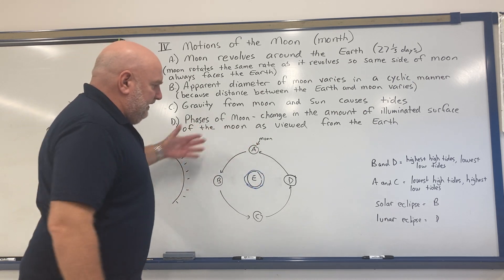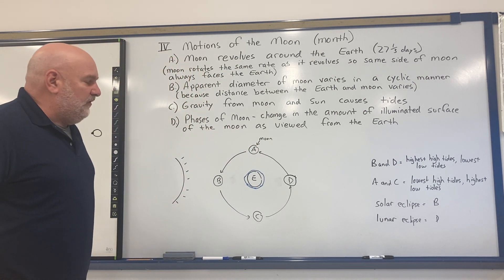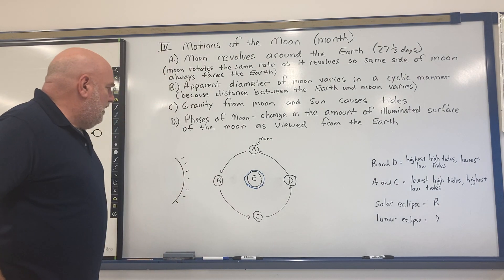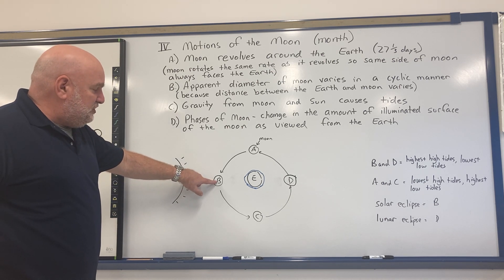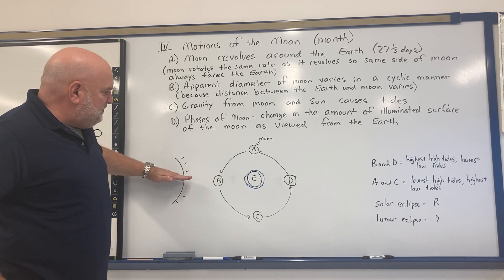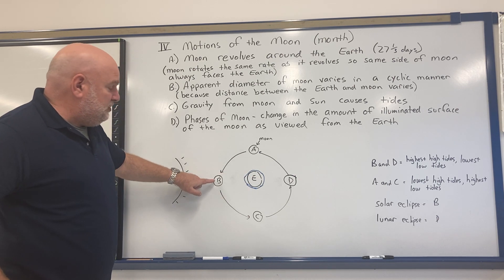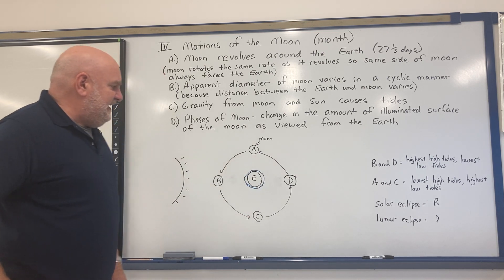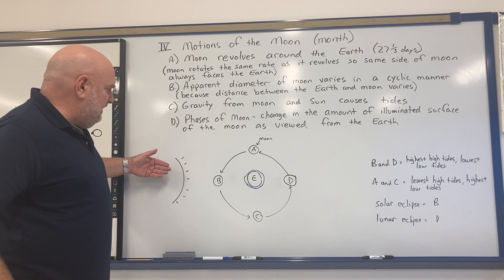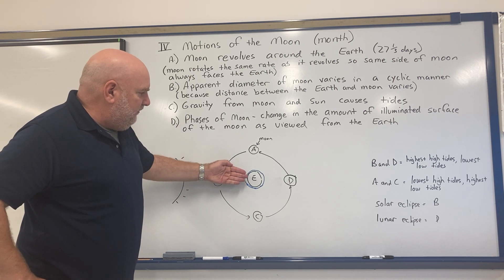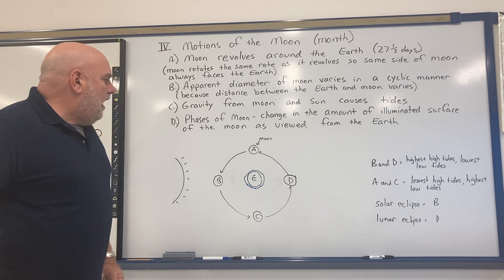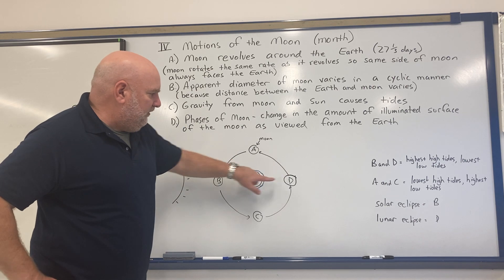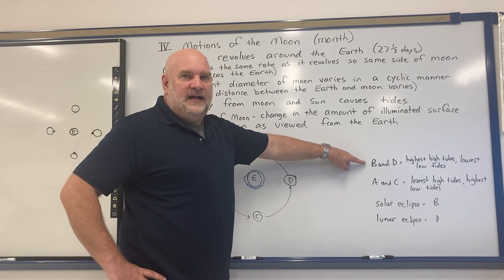A diagram like this can also show where eclipses occur. There are two types of eclipses. The more famous one is a solar eclipse, which would happen when the moon's at position B because it's blocking out the sun from getting to the Earth. A lunar eclipse occurs when the moon's at position D, because the Earth blocks out the sun's rays from getting to the moon. During eclipses — positions B and D — you also have really high tides and really low tides.